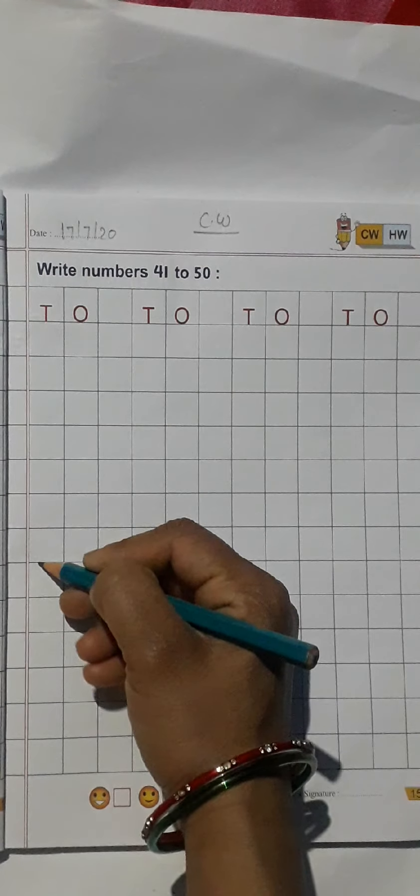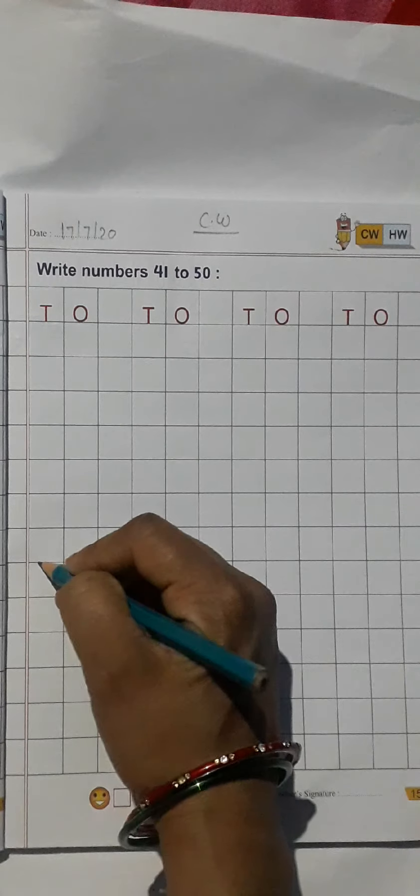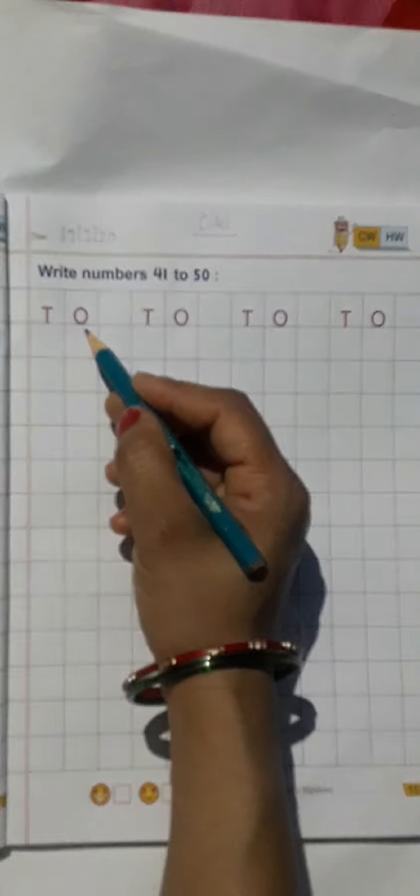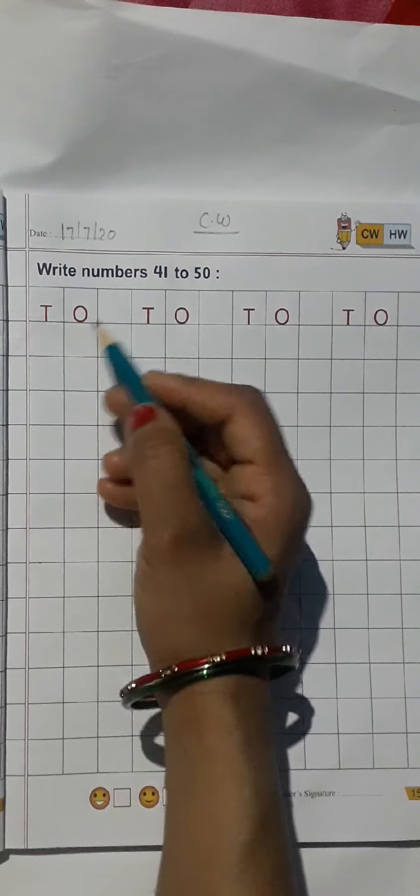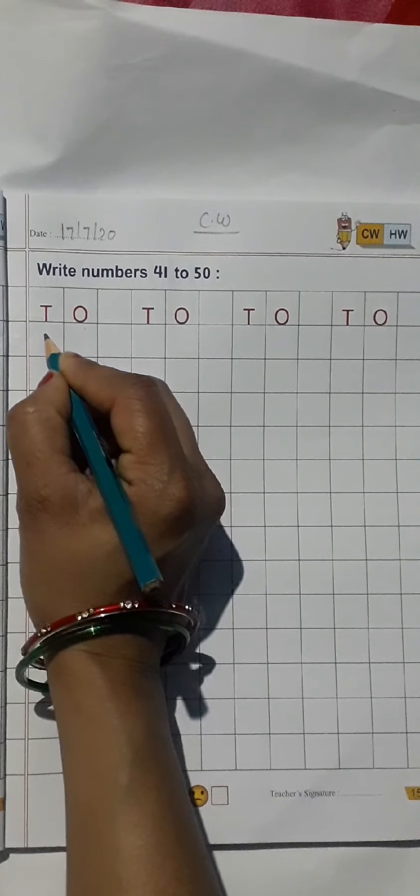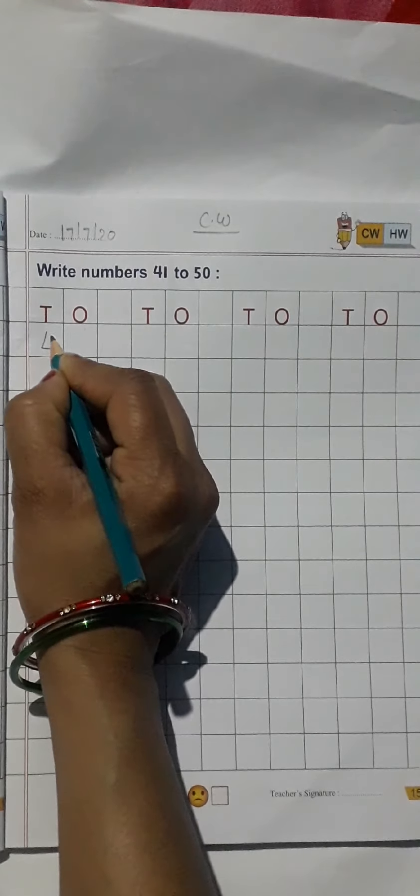So write the number 41. What comes after 41? Yes, 42, 43, and 44. What comes after 44? 45.